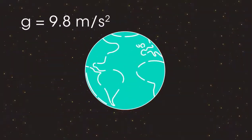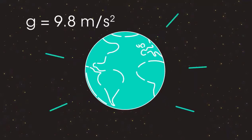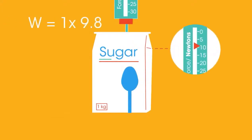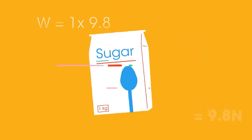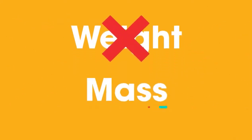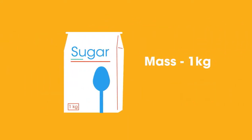On Earth, G equals 9.8 meters per second per second. So the weight of the 1 kilogram bag of sugar is 1 times 9.8, which equals 9.8 newtons, as the picture shows. Often, in everyday life, we use the word weight, when in fact we mean mass. The bag of sugar has a mass of 1 kilogram, but a weight of 9.8 newtons.